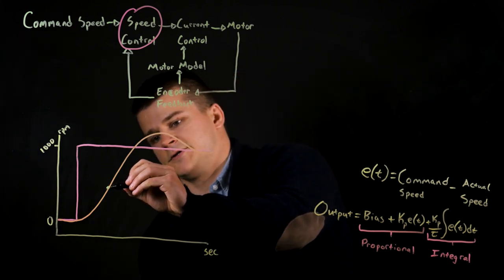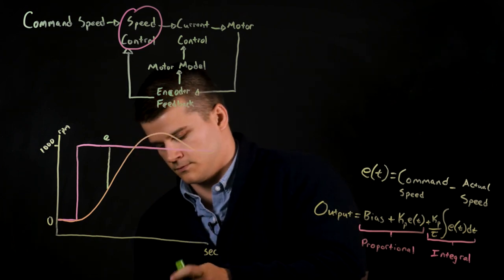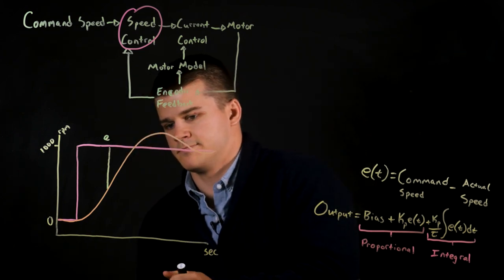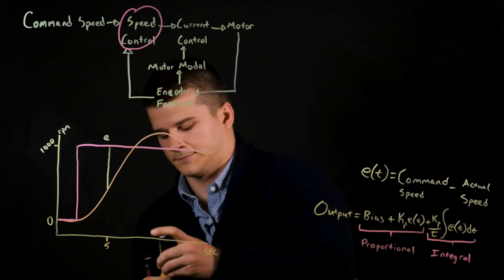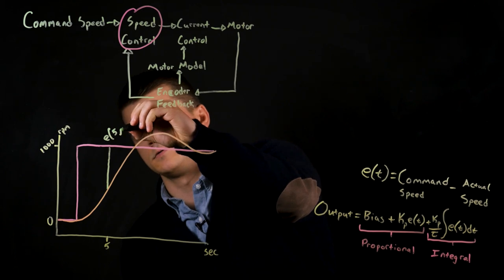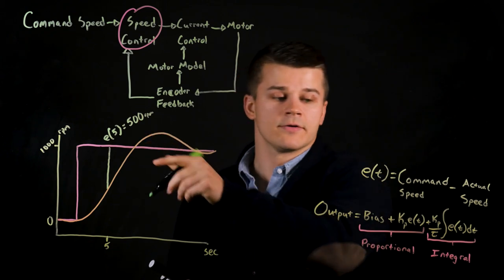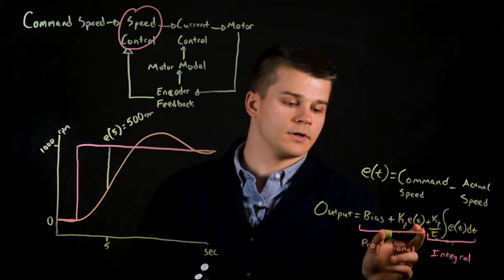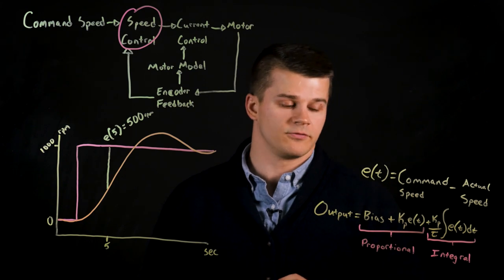So for instance at this point in time, the error we'll call this time five seconds. So the error at time five is roughly 500 RPM. This error is then fed back into your PI control algorithm and multiplied by the proportional control factor.